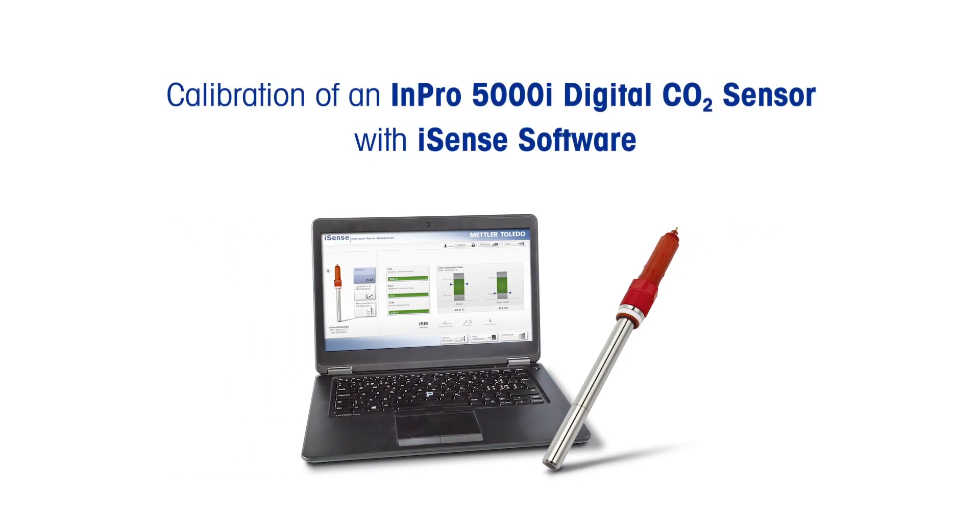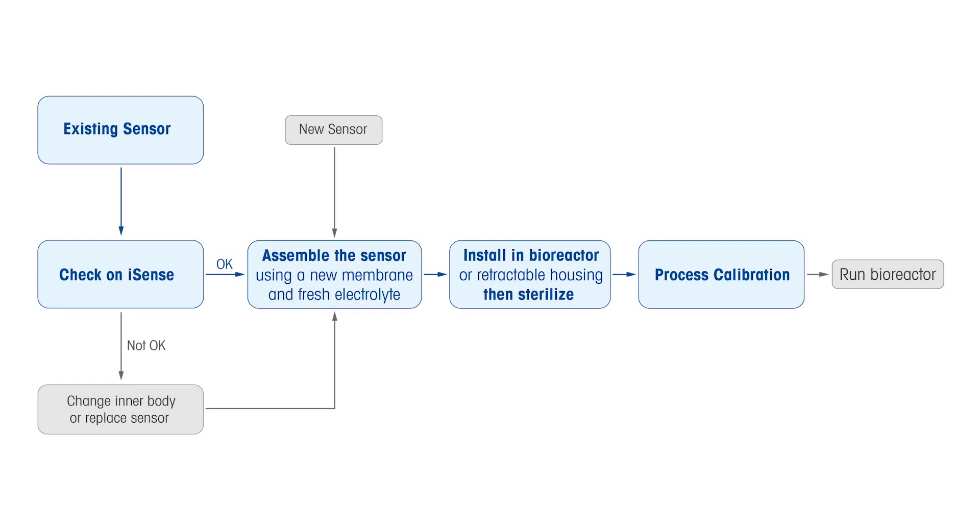The NPRO 5000i is a digital dissolved CO2 sensor for biopharmaceutical processes. All the necessary steps for maintaining the sensor and getting the best performance from it are explained in this video. It comes factory calibrated and the digitization of the sensor removes the necessity of frequent calibration. It only needs a post-sterilization adjustment in the bioreactor with a calibration gas before use.